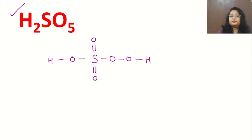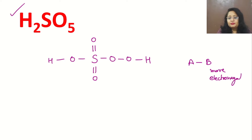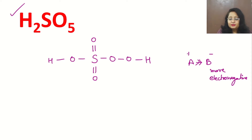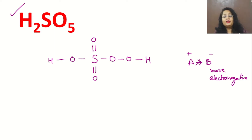We will now start calculating the oxidation state of sulfur. The basic concept we will apply here is: if there are two atoms A and B attached with a bond, and B is more electronegative, then B will take the shared pair of electrons towards itself and become minus, and A will turn into a plus charge. We will apply this concept to each and every bond — whichever atom is more electronegative gets the minus charge, and the other acquires the plus charge.